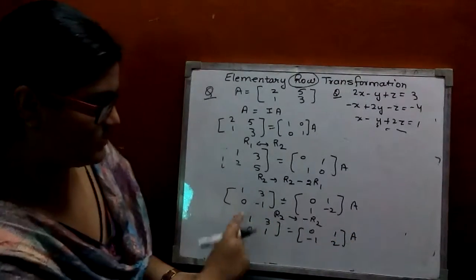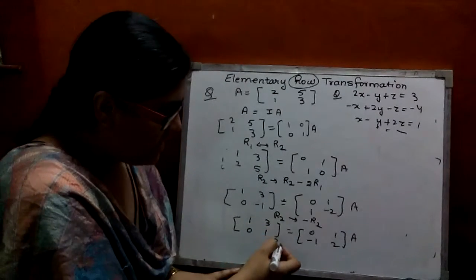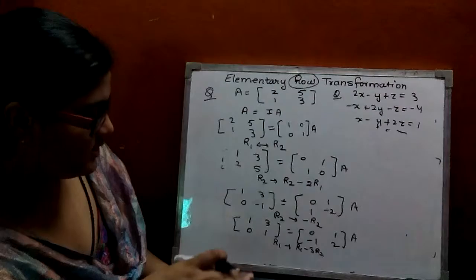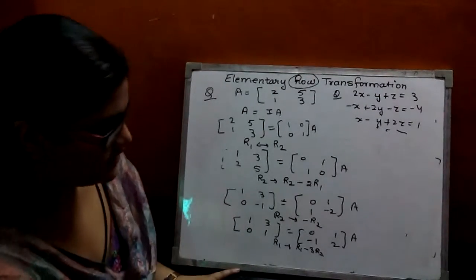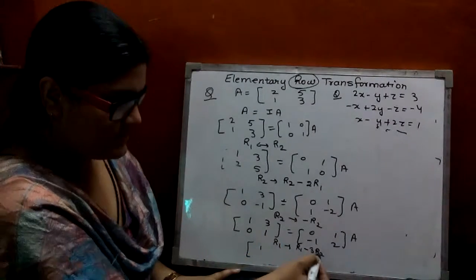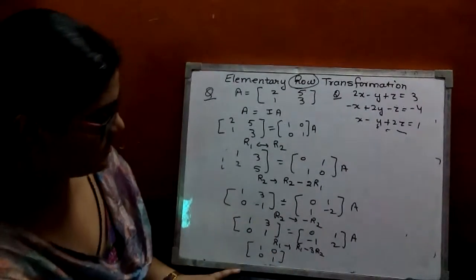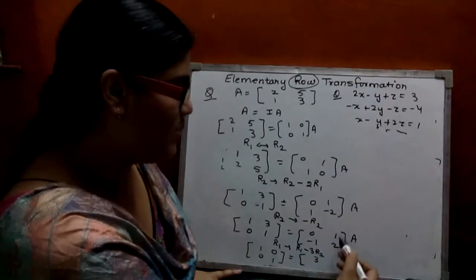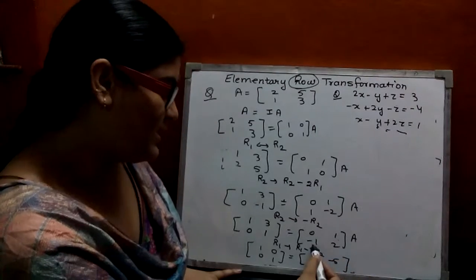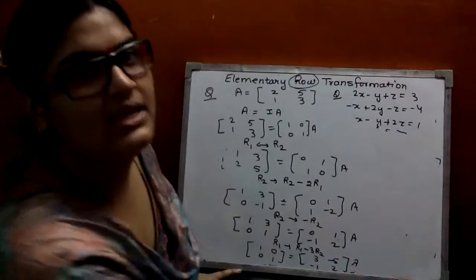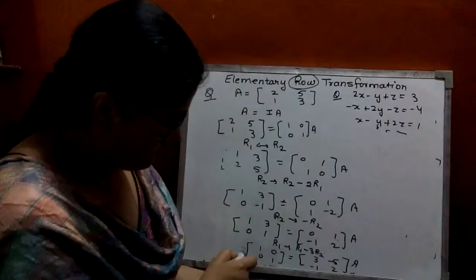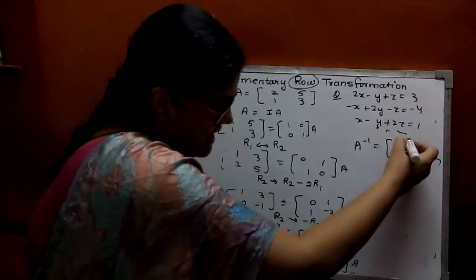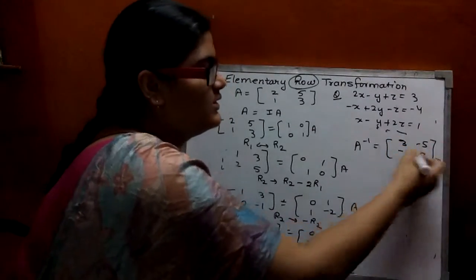The last step is to make 0 here to complete the identity matrix. Apply R1 becomes R1 minus 3R2. So 1, 3 minus 3 is 0, 0, 1 — this is complete. For the right side: minus minus plus 3, 1 minus 6 is minus 5. R2 remains as it is. When you have formed the identity matrix on LHS, you have just taken A inverse on the right side. So this is your A inverse.